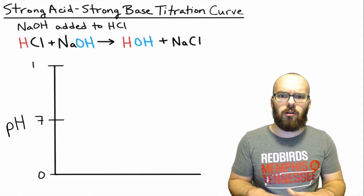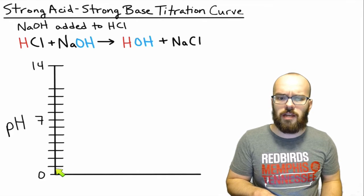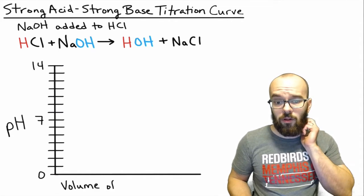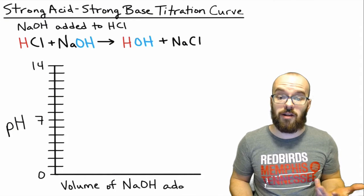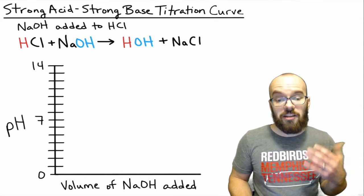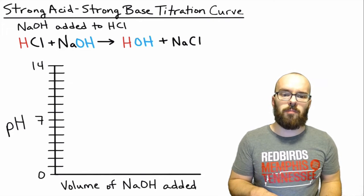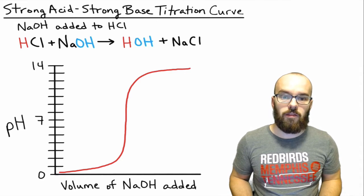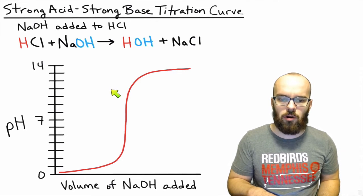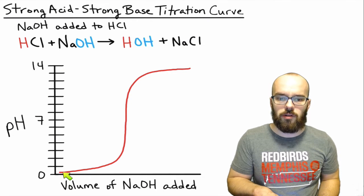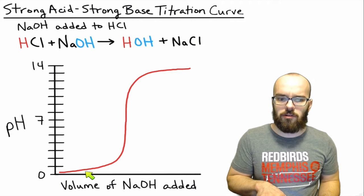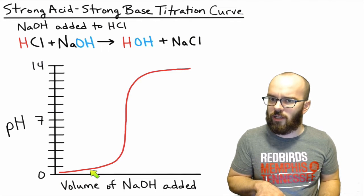Let's start out with our graph. On the left for the titration curve we're going to draw the pH and we'll number that from zero all the way up to 14. On the bottom we're going to label the volume of sodium hydroxide added, and as we add more sodium hydroxide our pH is going to increase. The graph actually looks like an S-shaped curve. We start with a really low pH, hydrochloric acid being very acidic, and as we add sodium hydroxide the pH increases but it increases slowly at first.